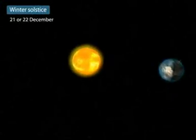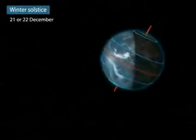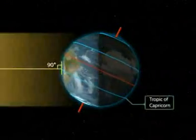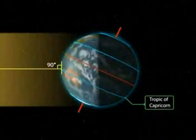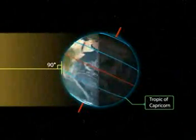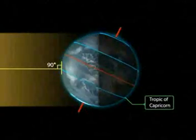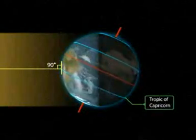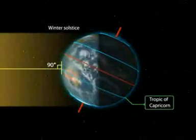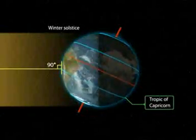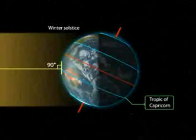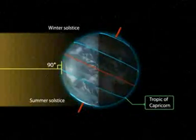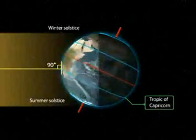Winter Solstice — On the 21st and 22nd of December, the overhead sun is over the Tropic of Capricorn. It receives the largest amount of solar radiation. On this day, the northern hemisphere is in the winter solstice, while the southern hemisphere is in the summer solstice.